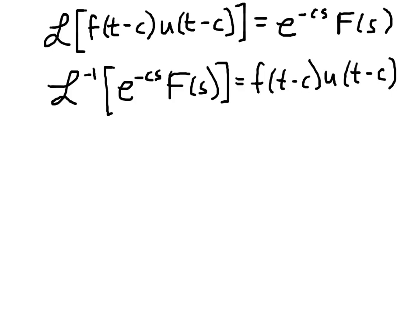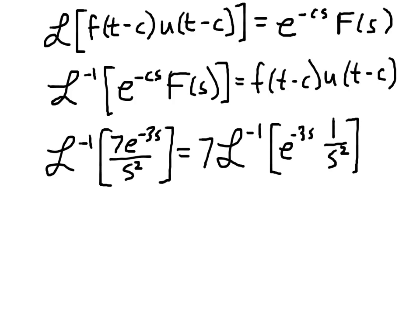Let's take a look at applying this to a few examples. So the first example we'll start with is this one, which you can see that we can modify a little bit. We can pull the 7 out of the inverse transform and we can move the e to the minus 3s off the top of the fraction. And then we get this, which you can see matches the form that we have back here. So what we have is a situation where C equals 3 and capital F of S is equal to 1 over S squared.